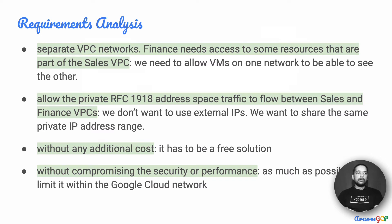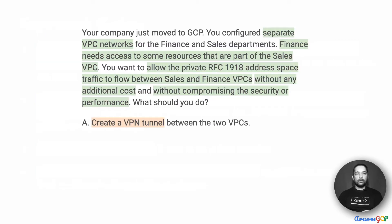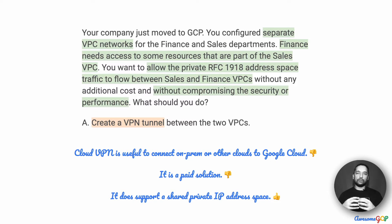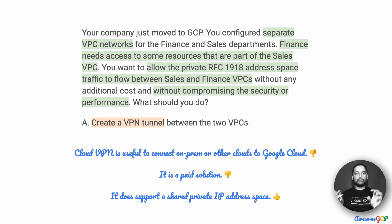Given these requirements, let us now look at each of the options and see what will suit us the best. Option A suggests that we create a VPN tunnel between the two VPCs. Typically, Cloud VPN is used to connect on-prem or other clouds to Google Cloud. It is not usually used if you are connecting things entirely within Google Cloud itself. In this case, both the finance and sales departments are within the Google network, so using Cloud VPN is not required.